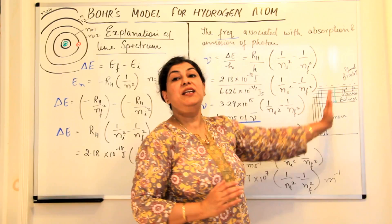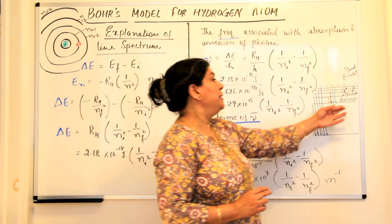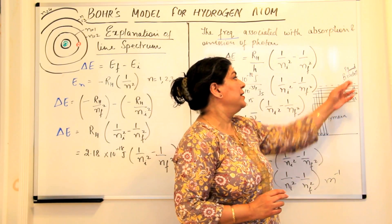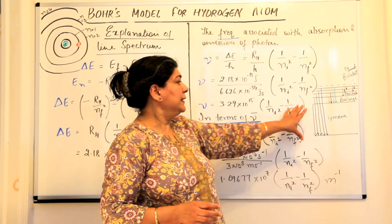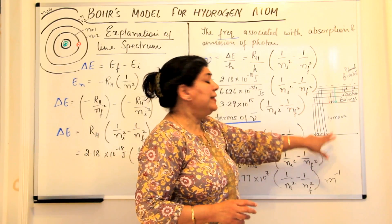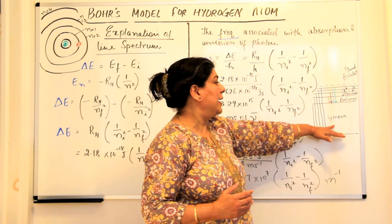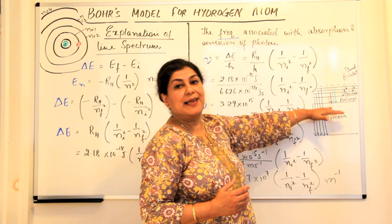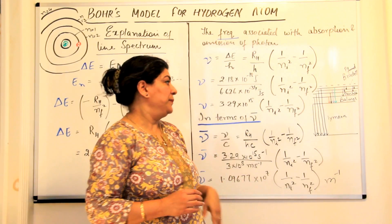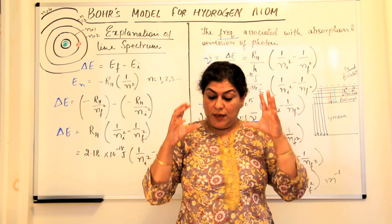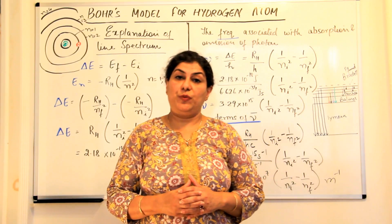Therefore we get these series of lines — the Lyman, Balmer, Paschen, Brackett, and Fund series. When the electrons jump to the first level, they are called the Lyman series; the second level is Balmer, and so on. This is what we had discussed in the previous video.